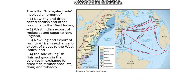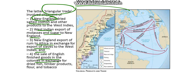The triangular trade involved a shipment of New England dried salted codfish and other products to the West Indies; West Indian export of molasses and sugar to New England; New England export of rum to Africa in exchange for the export of slaves to the West Indies; and the sale of English finished goods in the colonies in exchange for dried fish, timber products, and tobacco. The triangular trade route can be seen on this map, where slaves were taken from Africa and traded for goods, then taken to the West Indies and traded for rum or molasses, exported to the colonies, and materials sent to Great Britain, before the cycle began again with goods from Europe back to the West Coast of Africa to trade for slaves.